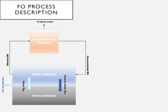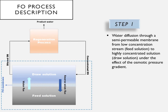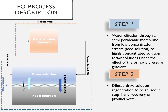This is a schematic representation of a basic forward osmosis process. As you can see, it is a two-step process. The first step consists of water diffusion through a semi-permeable membrane from a low concentration stream, which is the feed solution to be treated, to a highly concentrated draw solution, under the effects of osmotic pressure gradients. The second step is the regeneration process, which consists of reconcentrating the diluted draw solution to be used in step one and the recovery of product water.